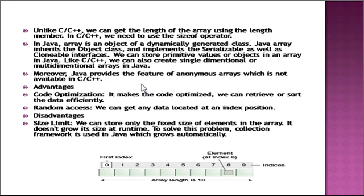Here are some advantages and disadvantages of Array in Java. Firstly, code optimization — it makes the code optimized, and we can retrieve or store the data efficiently. Secondly, random access — we can get any data located at a given index, because each data element is stored at a position indexed in the array. A disadvantage is size limit: we can store only a fixed number of elements in an array.